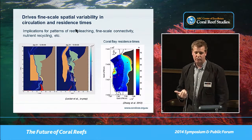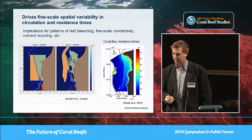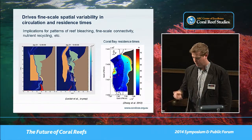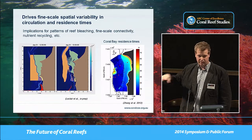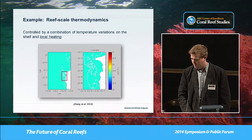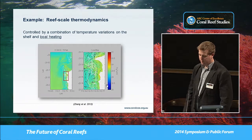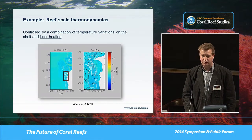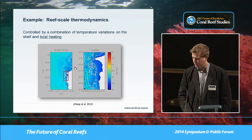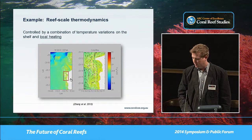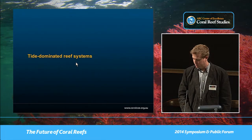All of this has important consequences for understanding fine-scale patterns of coral bleaching, fine-scale connectivity and recruitment patterns, and nutrient recycling as water moves through and is transformed in the reef. This also has major implications for understanding the thermal environments of these reef types, where you get substantial amplifications of inshore reef water temperatures.